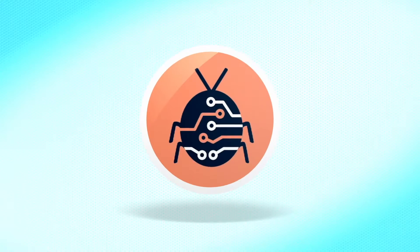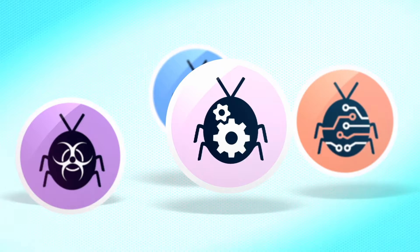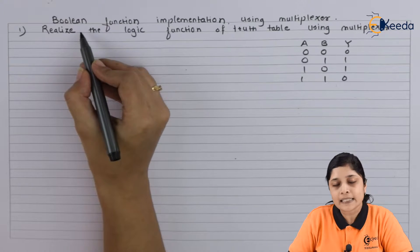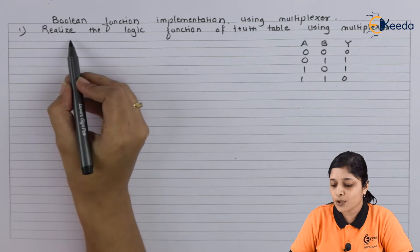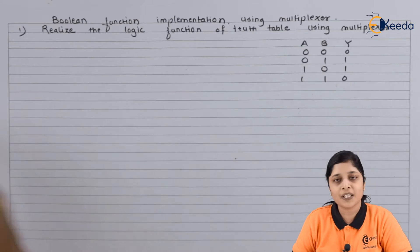We are discussing Boolean function implementation using multiplexer, and your question is: realize the logic function of truth table using multiplexer.